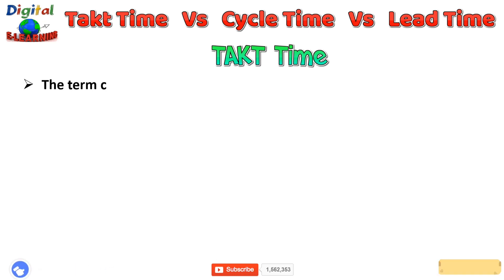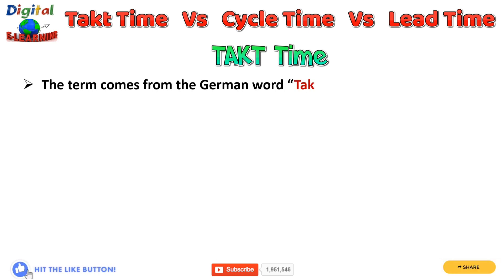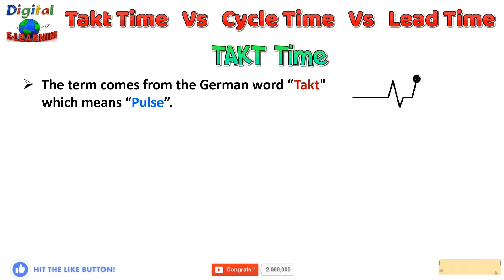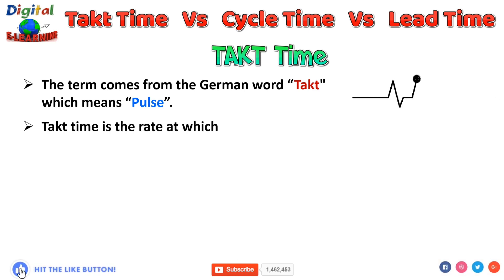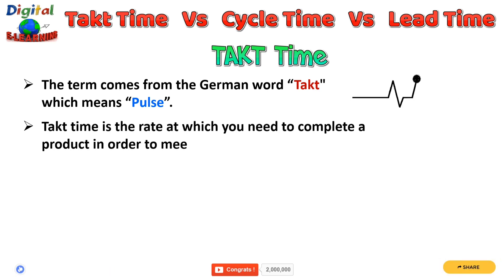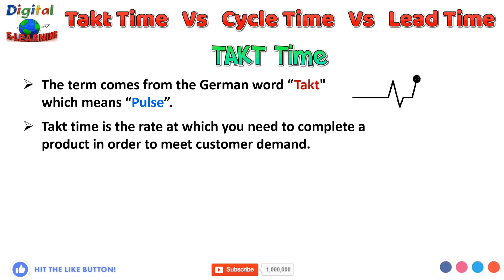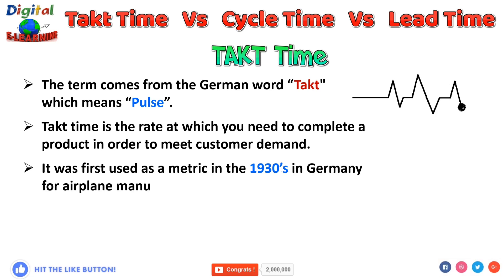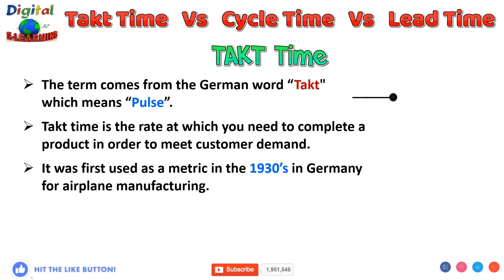Takt time — the term comes from a German word which means pulse. Just as your heart rate can speed up or slow down, your company's takt time can be high or low compared to the customer demand. Takt time is the rate at which you need to complete a product in order to meet customer demand. It was first used as a metric in the 1930s in Germany for airplane manufacturing, and 20 years later it contributed significantly to the rise of Toyota from a small Japanese car maker to the largest automobile company in the world.